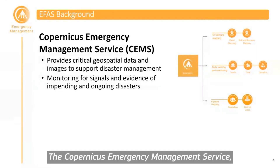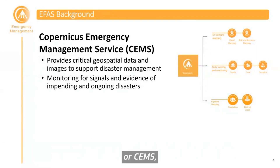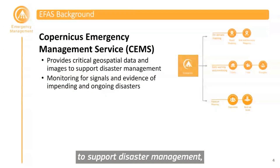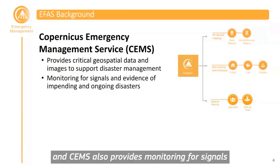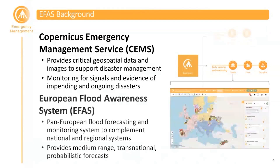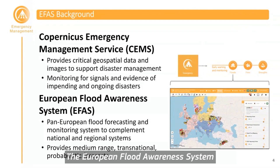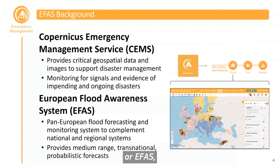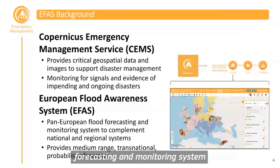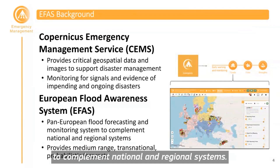The Copernicus Emergency Management Service, or CEMS, provides critical geospatial data and images to support disaster management. CEMS also provides monitoring for signals and evidence of impending and ongoing disasters. The European Flood Awareness System, or EFAS, is one of these different types of early warning systems, and it provides a pan-European flood forecasting and monitoring system to complement national and regional systems.